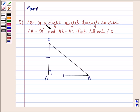The question says ABC is a right angle triangle in which angle A is equal to 90 degrees and AB is equal to AC. Find angle B and angle C.